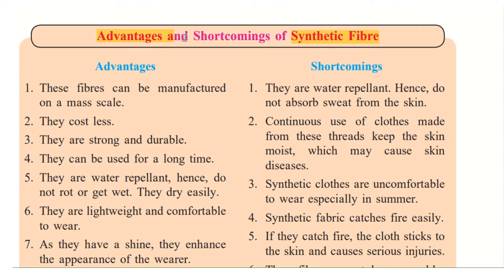Now let us reflect on the advantages — the good points — and shortcomings — the disadvantages — of using synthetic fibers. These fibers can be manufactured on a mass scale; a lot of threads can be made as per our needs, unlike natural fibers where cotton has to be grown or silkworms have to be reared. Synthetic fiber can be made as much or as little as we want, and it costs less compared to natural fibers.